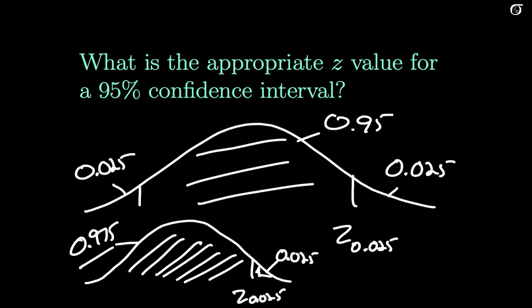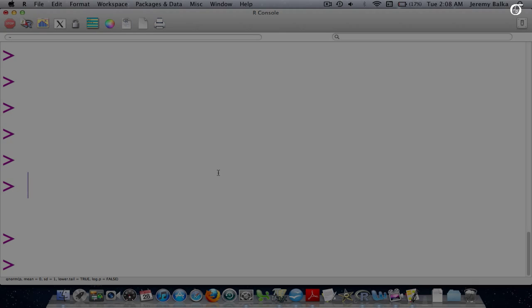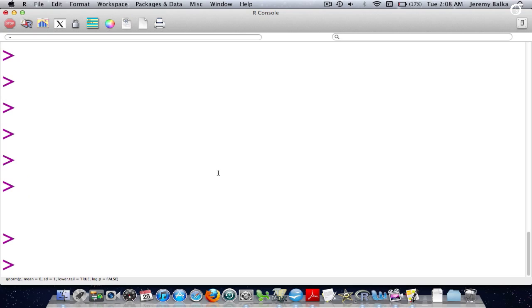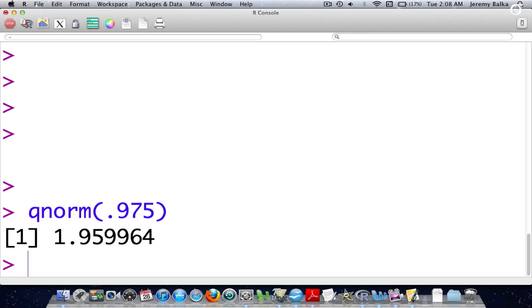So let's go to a computer first. Here we've got the computer package R and there's a very simple command to get us those values. If we want the z value with 0.975 to the left, we simply say QNORM 0.975. Give me the z value with 0.975 of an area to the left. And that's 1.959964, which looks an awful lot like the 1.96 that we use for 95% intervals.